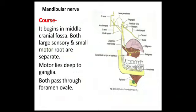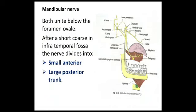Its course begins in the middle cranial fossa. Both the large sensory component and the motor component are separate. The motor root lies below the ganglia. Both roots pass through the foramen ovale. Below the foramen ovale, both roots unite. After a short course in the infratemporal fossa, the nerve divides into a small anterior division and a larger posterior division.